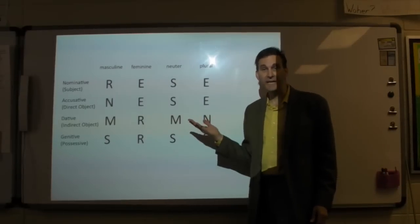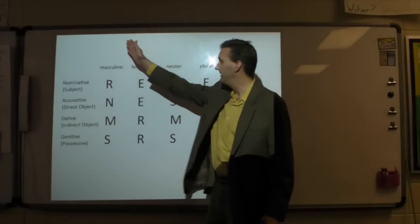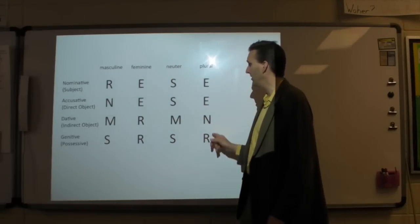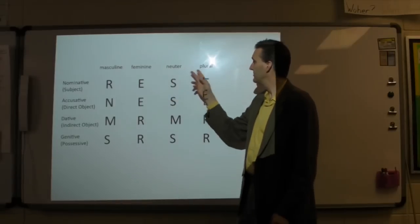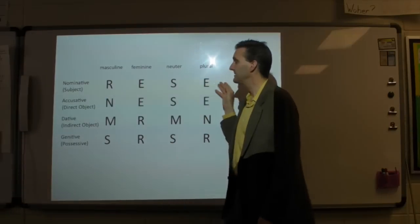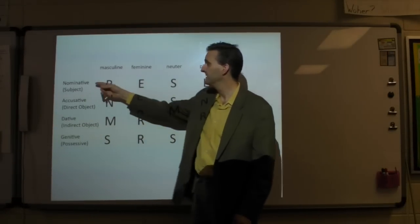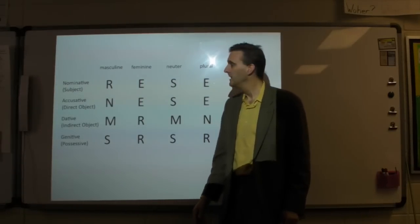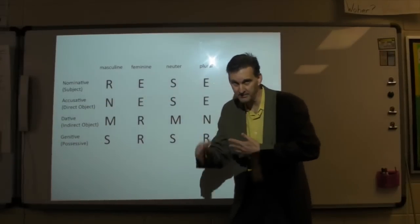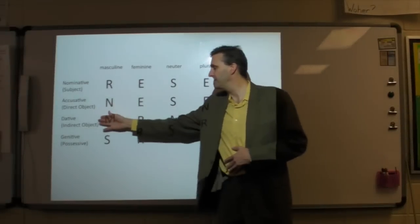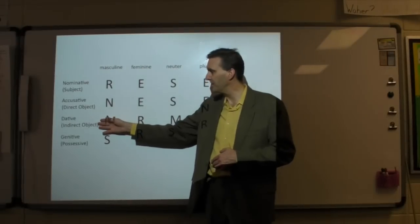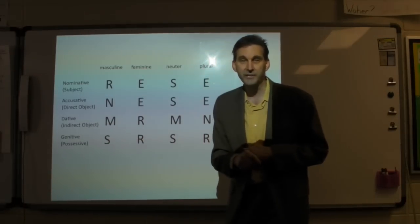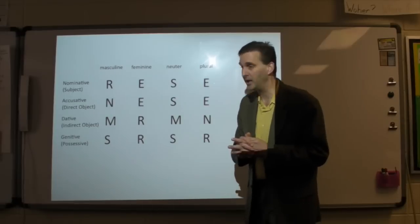If you're taking notes, you may want to add this information. This column here is masculine, this column is feminine, this column is neuter, this column is plural. This row is nominative — that's a fancy word for basically being the subject. This row is accusative, which is basically the direct object and a little bit more — let's just call it the direct object for now. This row is the dative, another strange word, but let's basically call it the indirect object.